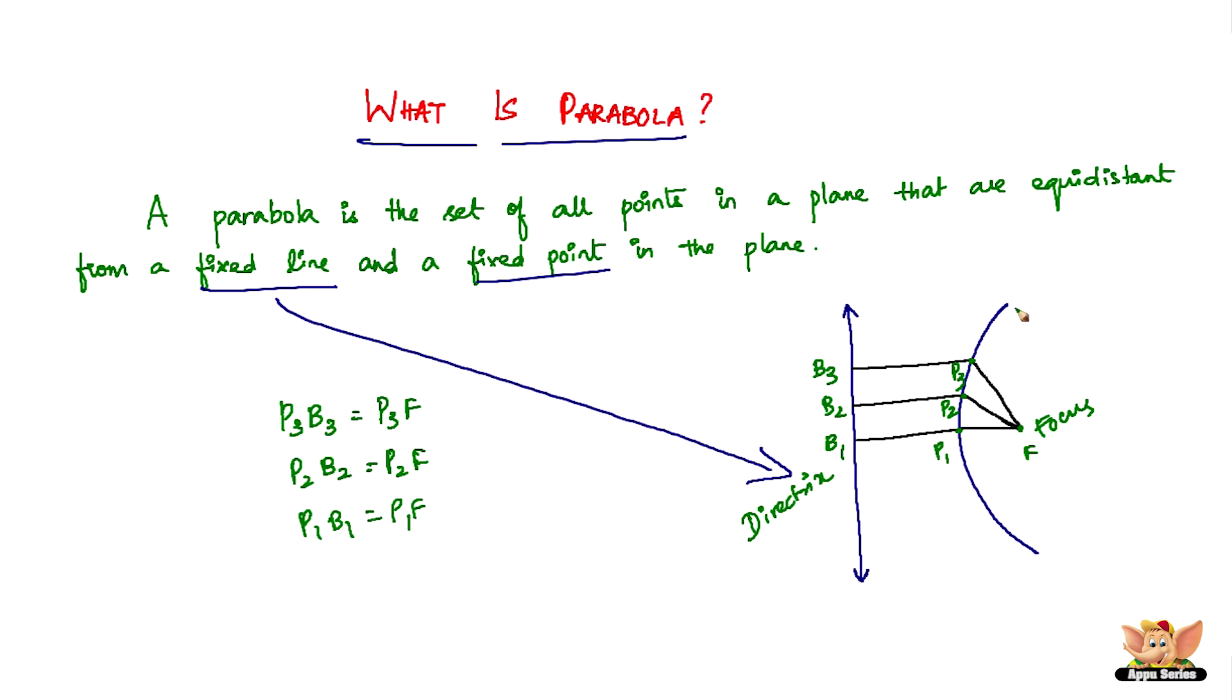So this is the kind of curve which has got the set of all points such that the distance of the point to a fixed line is equal to the distance of the same point with respect to a fixed point, which is called as the focus. So those kind of set of points is called as a parabola.